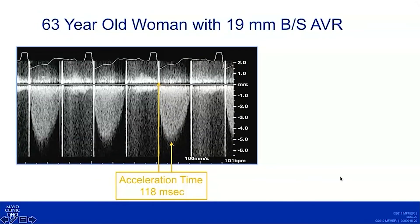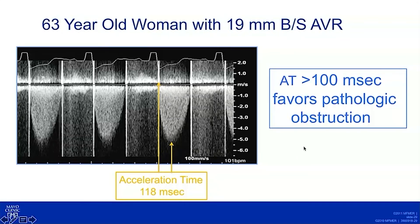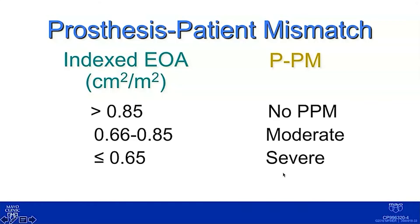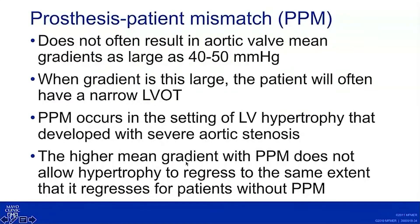For comparison, here's another patient with a 19 mm Björk-Shiley prosthesis that had pannus underneath it. The acceleration time there is 118 milliseconds — that's what pathologic obstruction looks like. Based on our findings, we diagnosed likely prosthesis-patient mismatch, which is considered severe at an indexed effective orifice area less than or equal to 0.65 cm²/m² — which she met. Even with severe mismatch, you rarely see gradients as high as 43 or 50; you more often see gradients in the 20s or low 30s, though we have seen patients with such high gradients attributed to PPM on long-term follow-up.